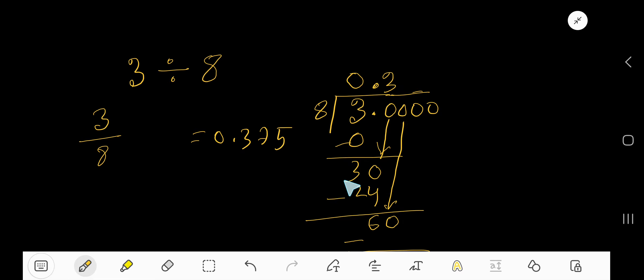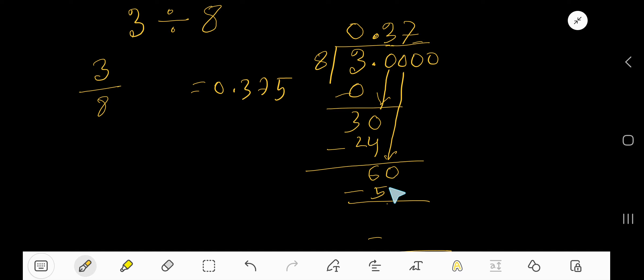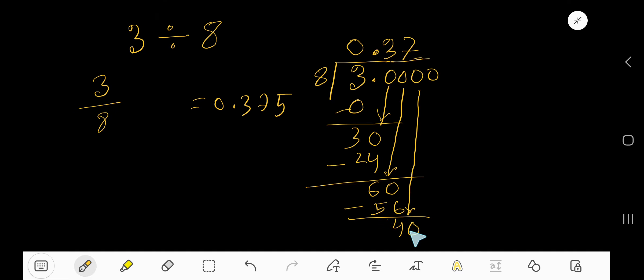Eight goes into sixty how many times? Seven times. Seven times eight equals fifty six. If you subtract, then you are getting four. Bring down the zero: forty. Eight goes into forty how many times?